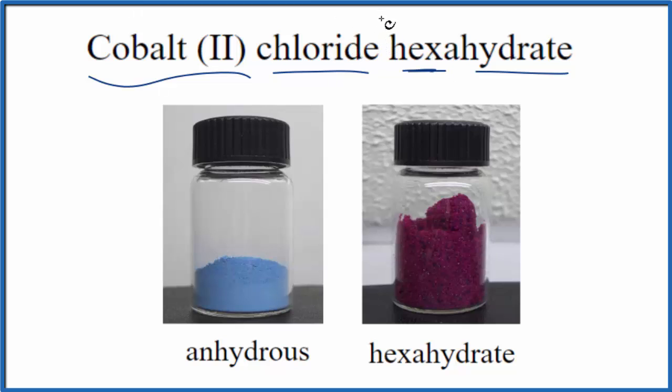If we just had cobalt chloride here, we'd call that anhydrous. It would be this kind of light blue color. If we had the hexahydrate, the cobalt chloride hexahydrate, that would be this purple. They're both solids, but this one has six water molecules around each cobalt chloride.